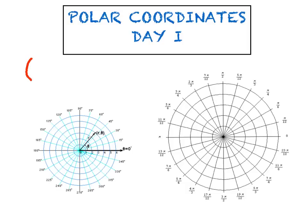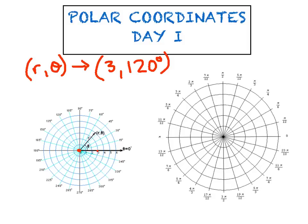Our coordinates instead of being x, y are going to be r, θ. For example, the point 3, 120° means we start at what's called the pole — it used to be called the origin. We walk three units on what used to be called the x-axis, then rotate counterclockwise 120 degrees on that arc, landing at point P. Very important: as long as the angle is positive, we always go counterclockwise. If the angle is negative, we go clockwise.